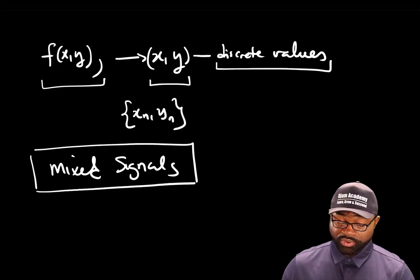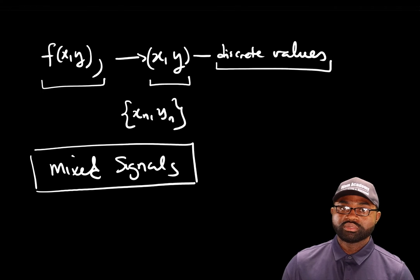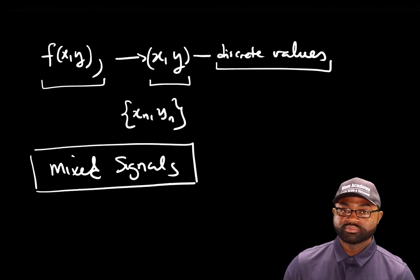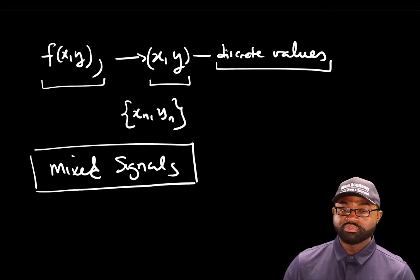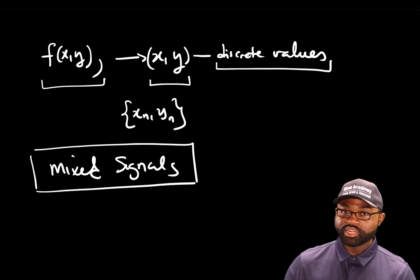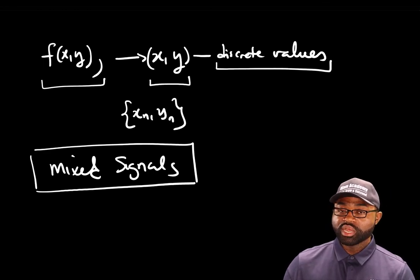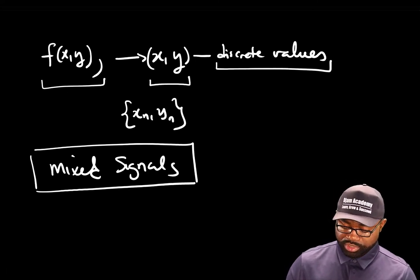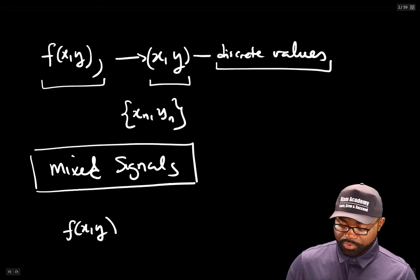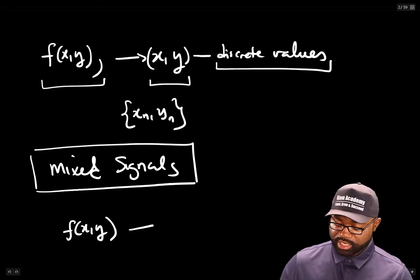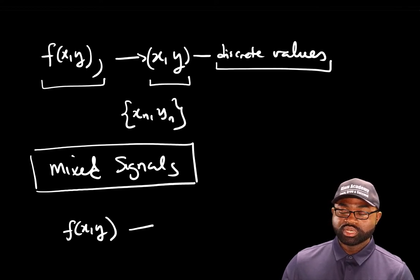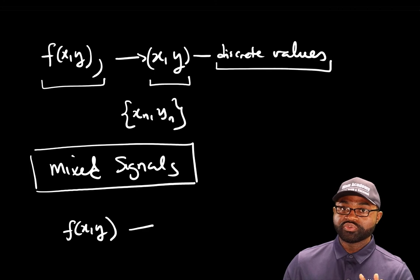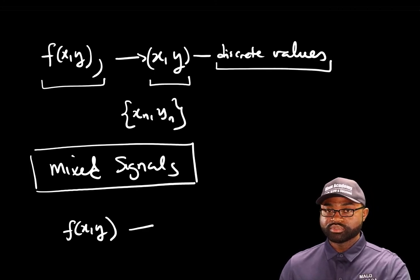The third category is the mixed signal. A mixed signal is represented by a function whose independent variables are both continuous and discrete. In other words, if a mixed signal is represented by a function, X can be continuous and Y can be discrete, so the function has a mixture of continuous and discrete variables — that defines a mixed signal.